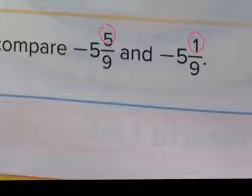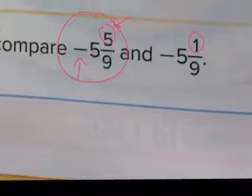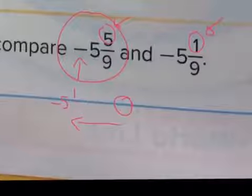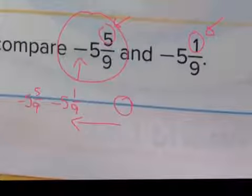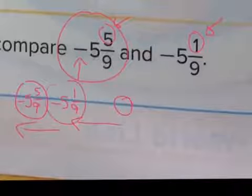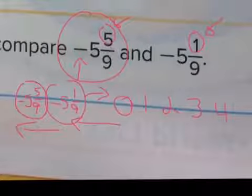We're looking for the lesser and greater value — it's a negative value. That means this number, because the five is higher, is further away from zero than this other number. Because we're moving in the negative direction, we're going to find negative five and one-ninth before we find negative five and five-ninths as we count up from negative six toward zero. As the value increases, because it's negative, it's actually moving in that direction.